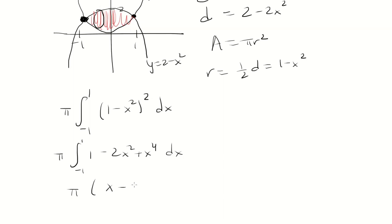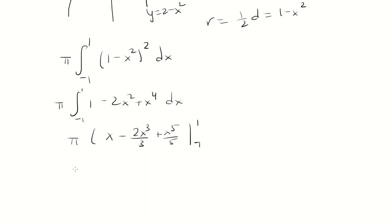So we integrate to get pi times x minus 2x cubed over 3 plus x to the fifth over 5, evaluated from negative 1 to 1. We're going to plug in 1: we have 1 minus 2 thirds plus a fifth. And then minus plugging in negative 1: that's negative 1 plus 2 thirds minus a fifth.